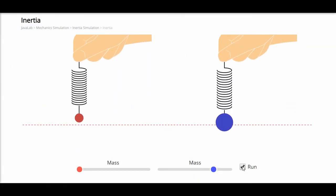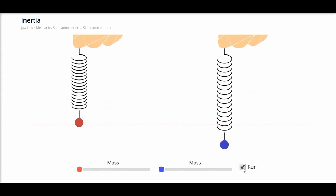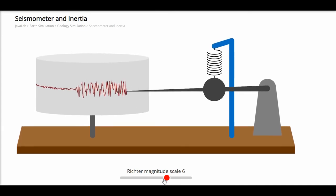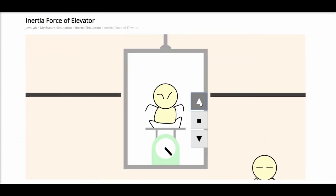We define inertia as a tendency of an object to remain in its existing state in the absence of any external force. We can visualize it with this simulation.